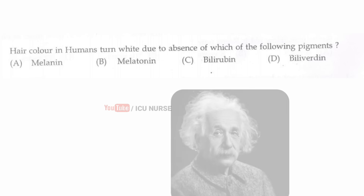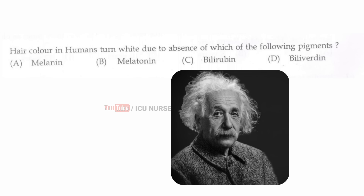Hair color in humans turns white due to the absence of which of the following pigments? The correct answer is A, melanin.